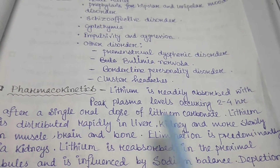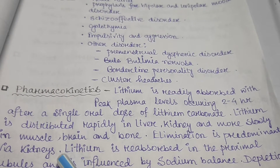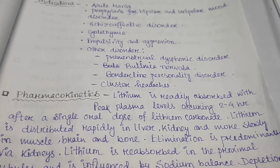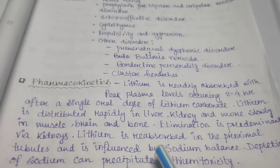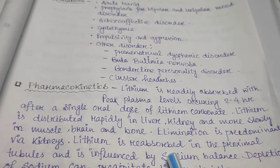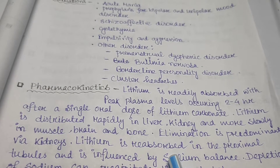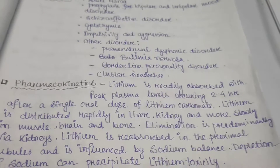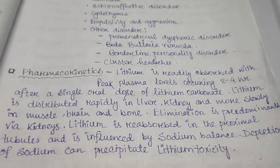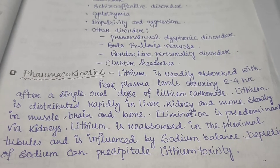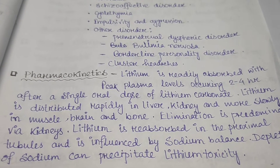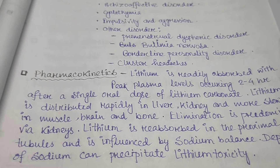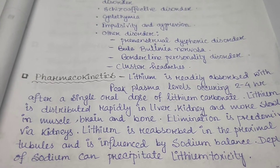Elimination is predominantly by the kidney. Lithium is reabsorbed in the proximal tubules and is influenced by sodium balance. Depletion of sodium can precipitate lithium toxicity — meaning if sodium levels in the blood fall, lithium levels can rise above the normal therapeutic level, causing lithium toxicity.